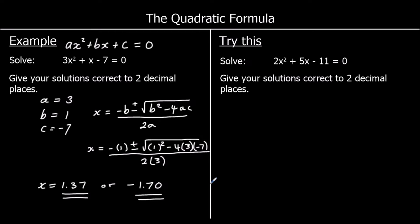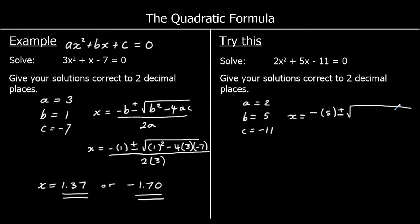So we've got two answers, and that's done. So there's one for you to try — give this one a go. This time, a is 2, b is 5, and c is negative 11. So the quadratic formula is x equals minus b plus or minus the square root of b squared minus 4ac all over 2a. Let's substitute in: we're going to have minus 5 plus or minus the square root of 5 squared minus 4 times 2 times negative 11, all over 2 times 2.